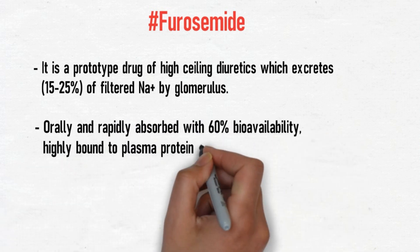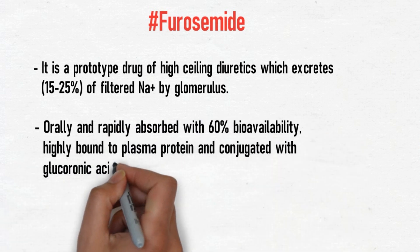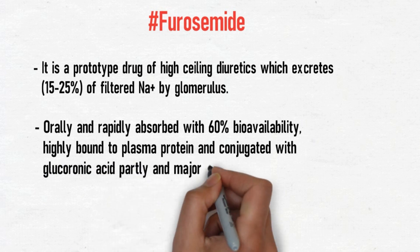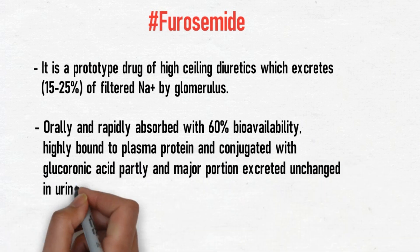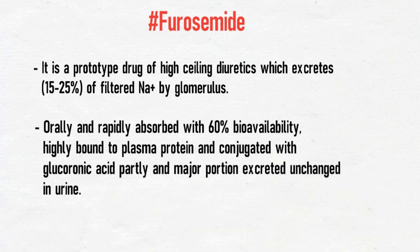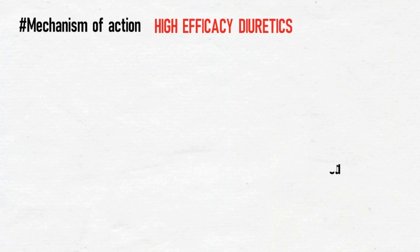Furosemide is orally and rapidly absorbed with 60 percent bioavailability. It is highly bound to plasma proteins and conjugated with glucuronic acid partly, with the major portion excreted unchanged in urine.